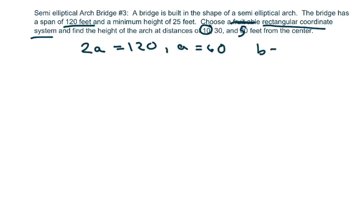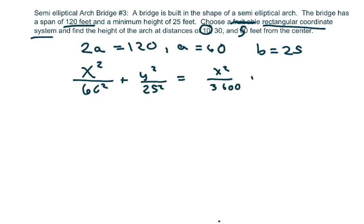I'll set up my equation with the center at the origin $(0,0)$, so we have $\frac{x^2}{60^2} + \frac{y^2}{25^2} = 1$. This simplifies to $\frac{x^2}{3600} + \frac{y^2}{625} = 1$.